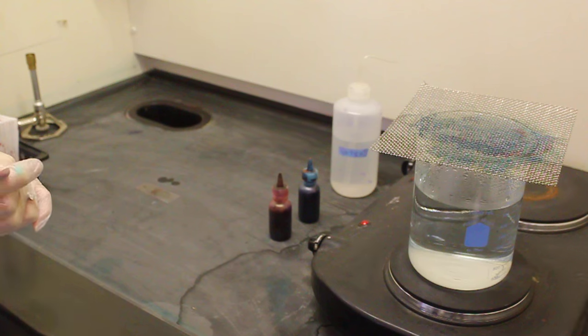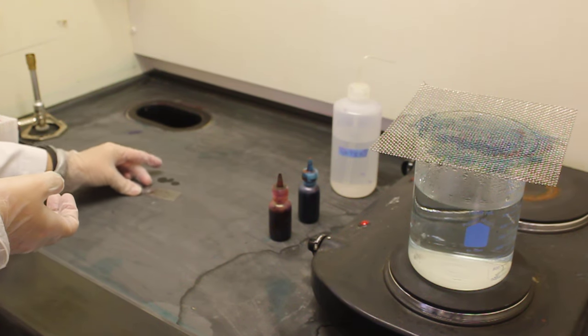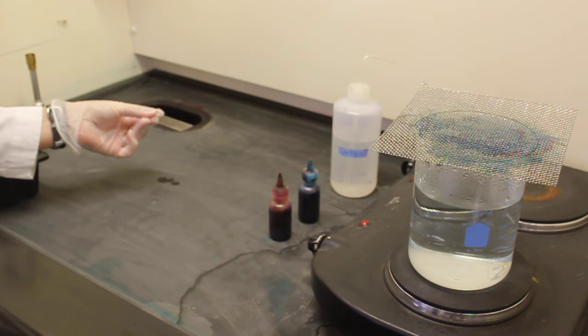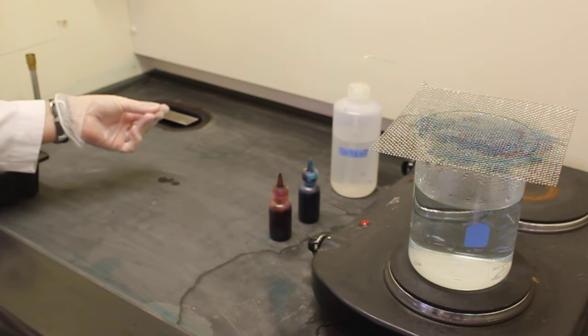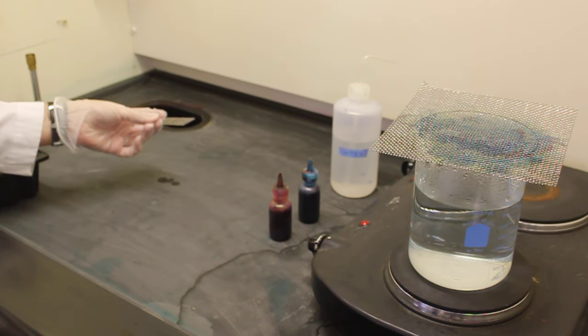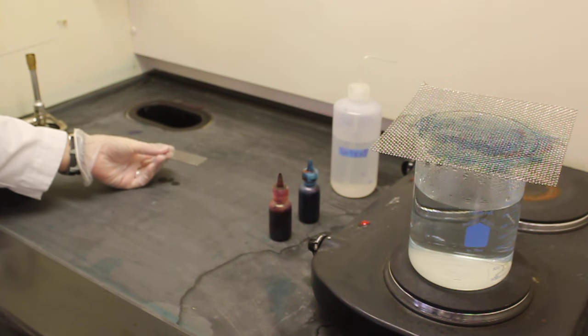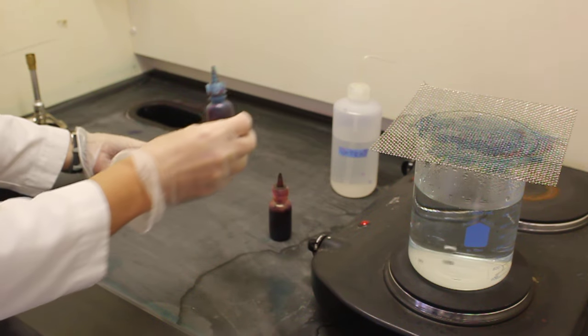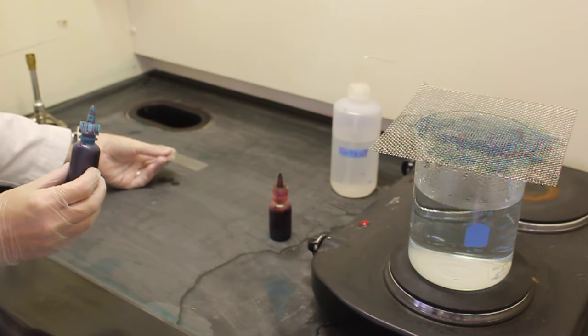To begin our staining process, we must begin with a smear that has been heat-fixed. This was completed before the video began. The first step of the endospore stain requires the addition of the primary stain, malachite green.